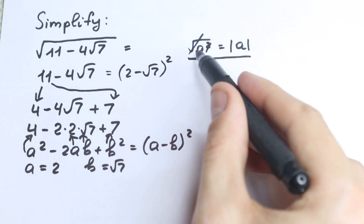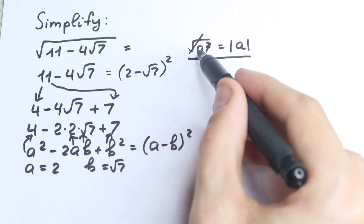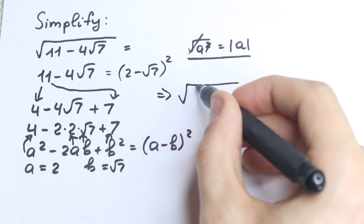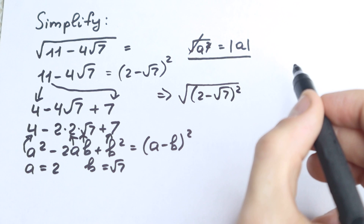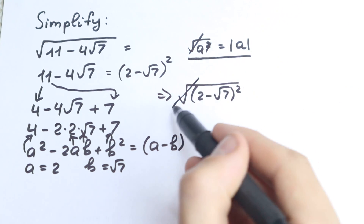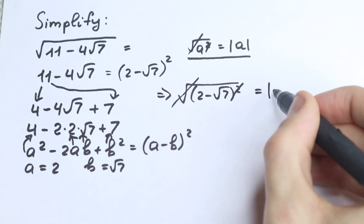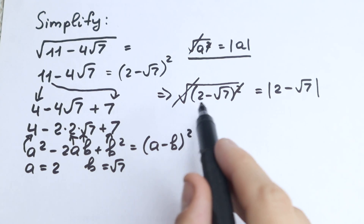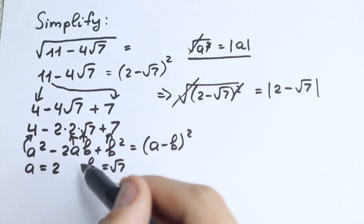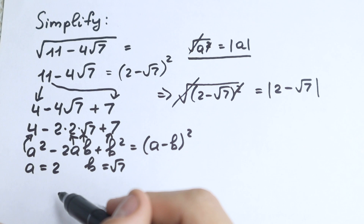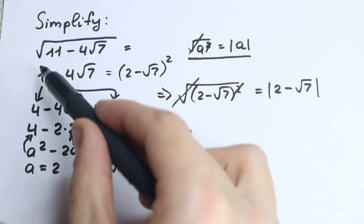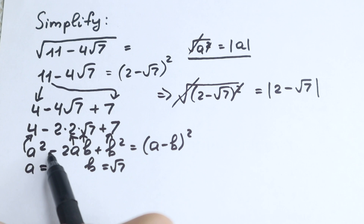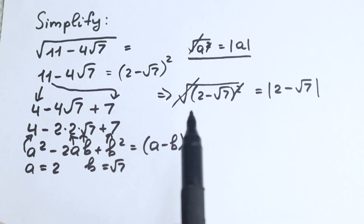Going back to our main rule: if we have the square root of something in the second power, we get the absolute value of that expression. So square root of (2 minus square root of 7) squared gives us the absolute value of 2 minus square root of 7. We cancel the square root and the square, leaving |2 minus √7|. This two-step process — rewriting 11 as 4 plus 7 and recognizing the formula a squared minus 2ab plus b squared — is the key trick.